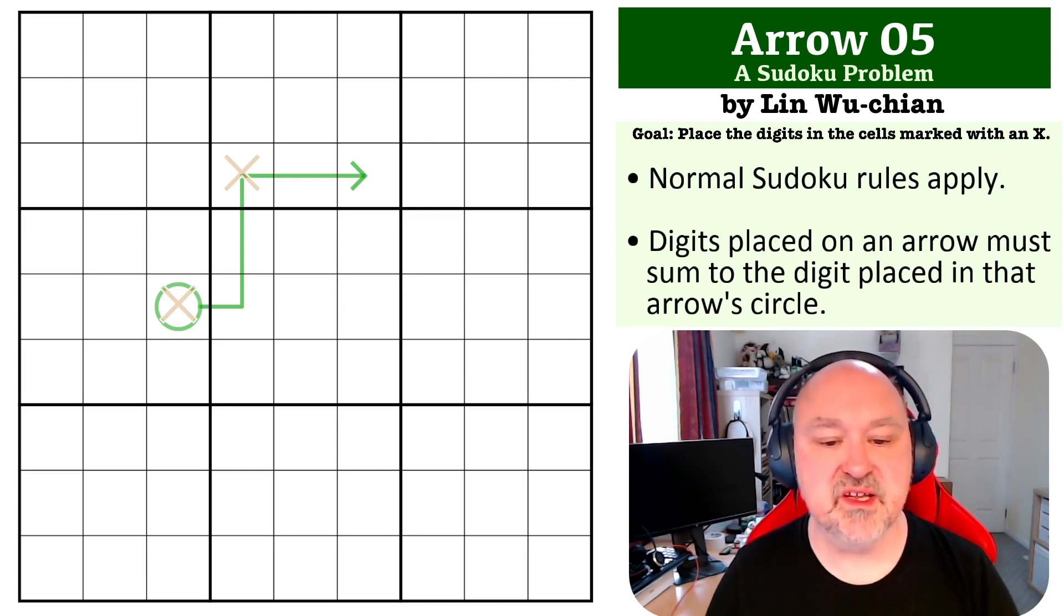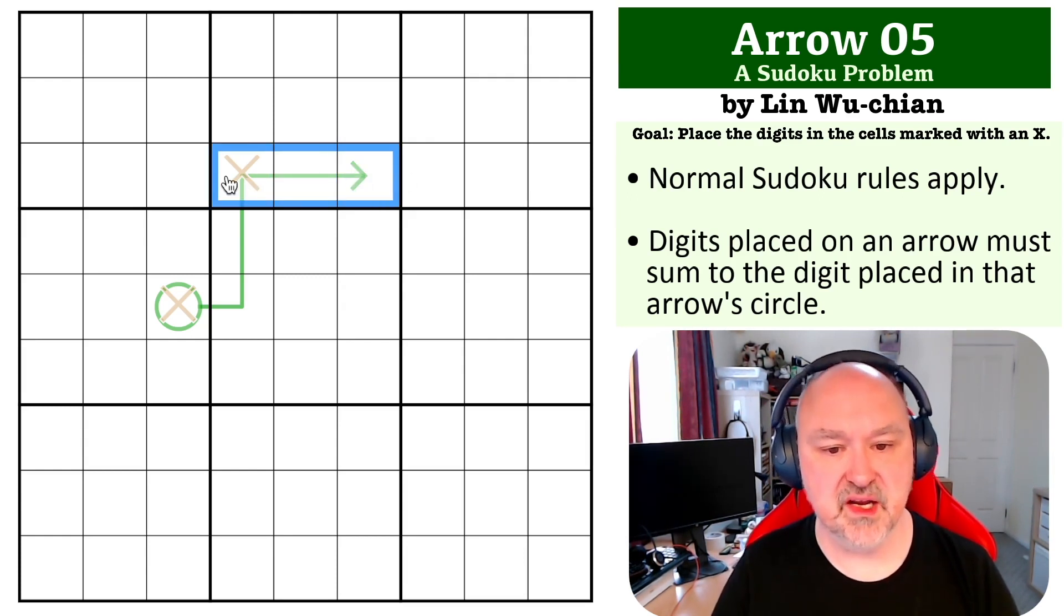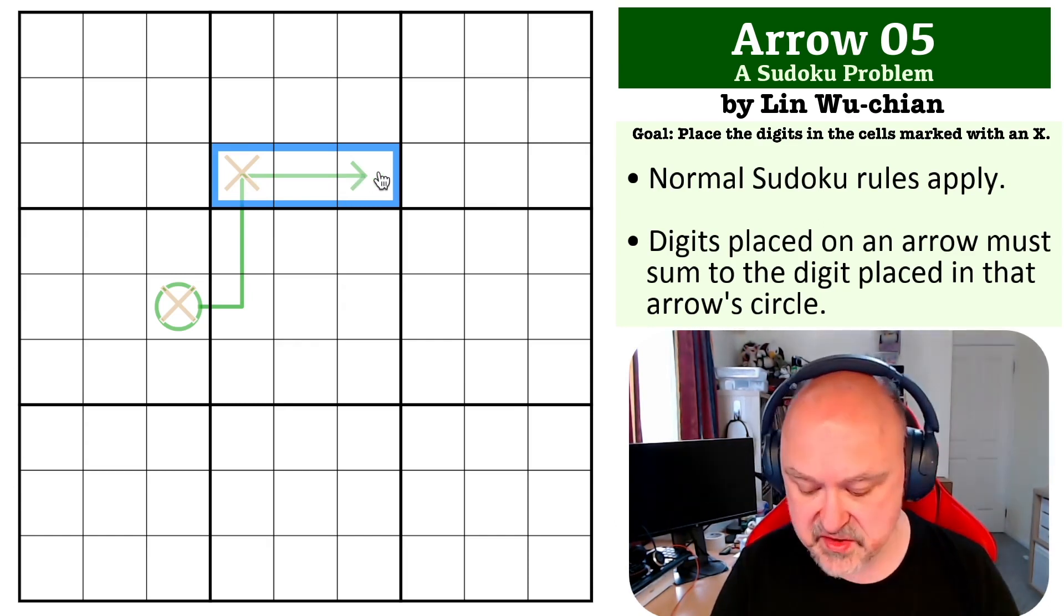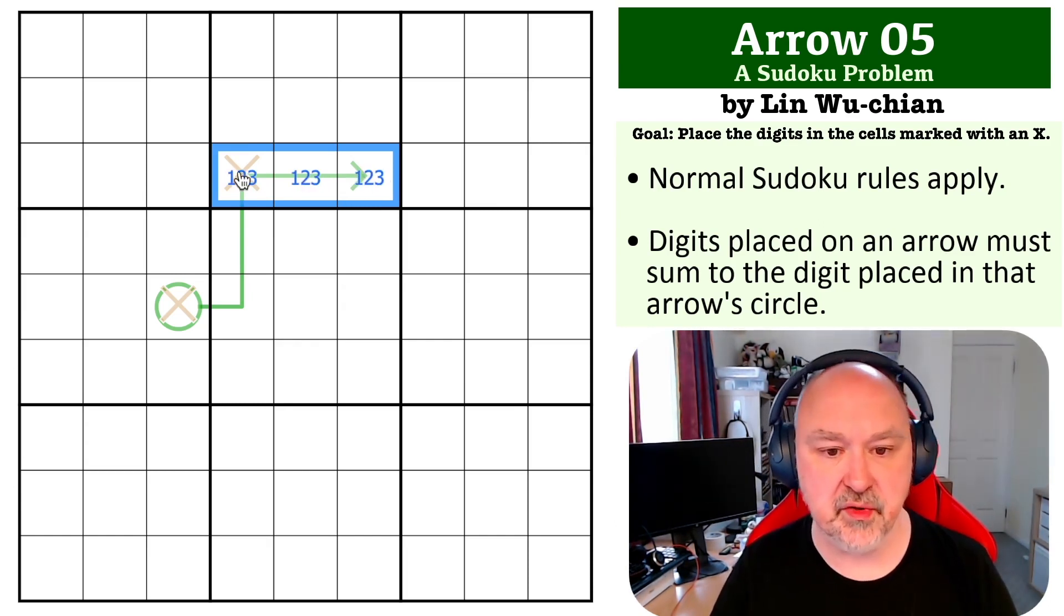Okay, so with this one, basically what you want to look at is the minimum digits that can go into cells. The minimum you can put into three cells in the same box is 1, 2, and 3. So if we were to pencil mark this with 1, 2, and 3, the minimum there we have is a total of 6.